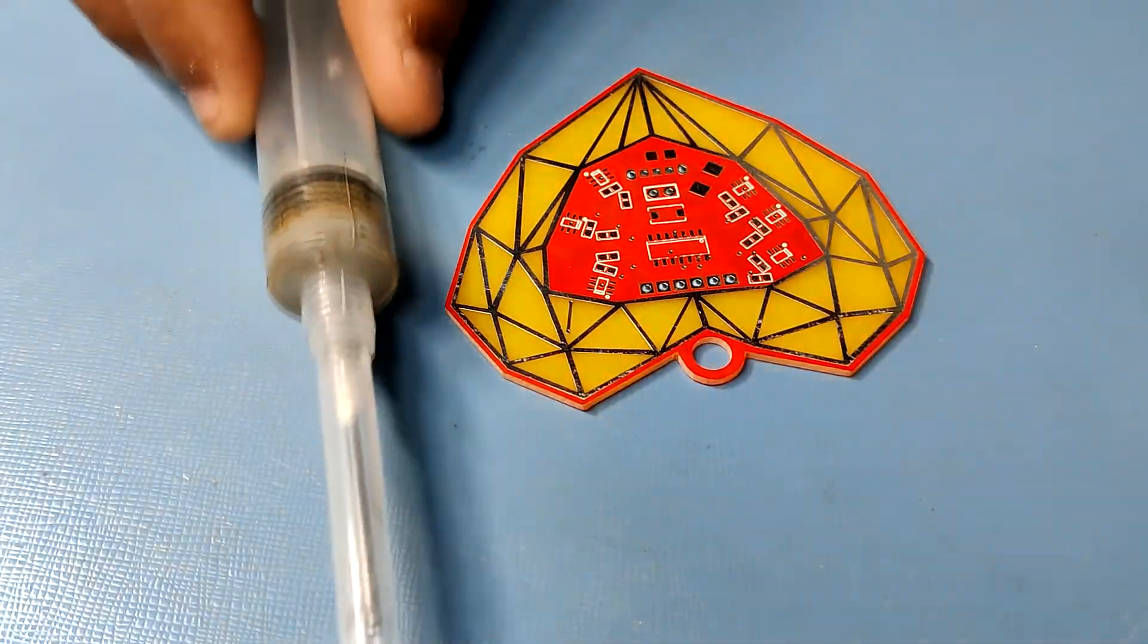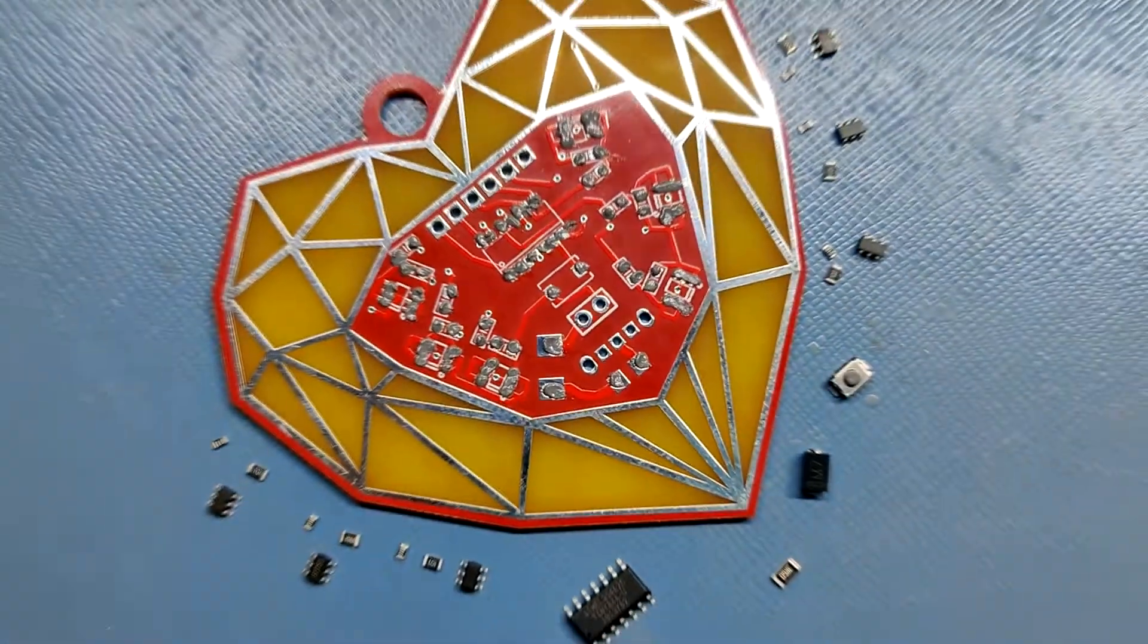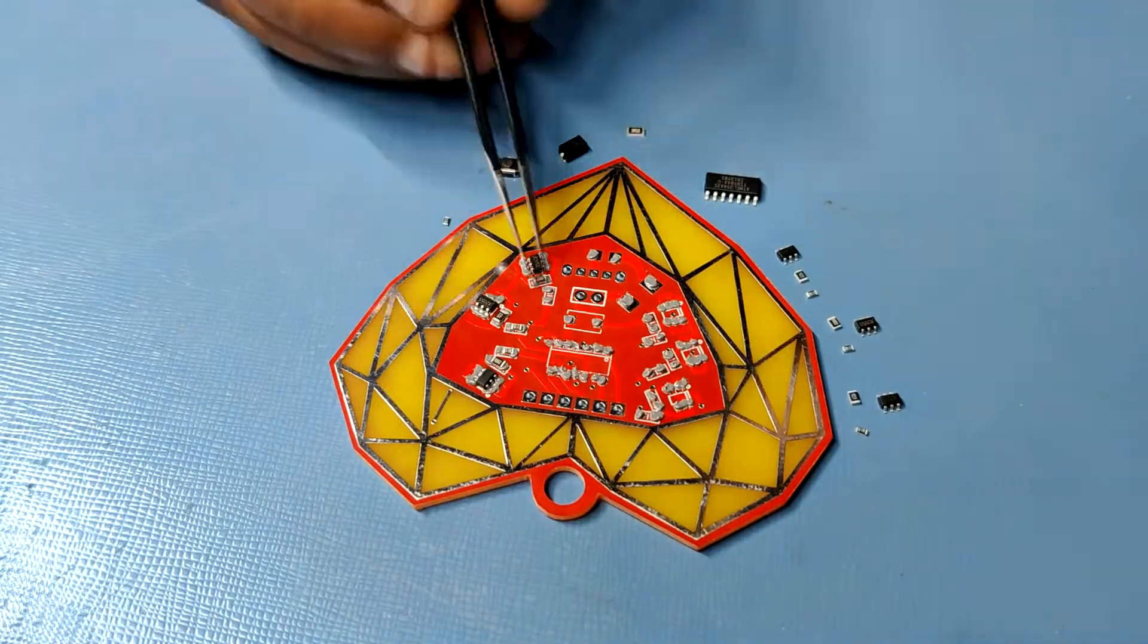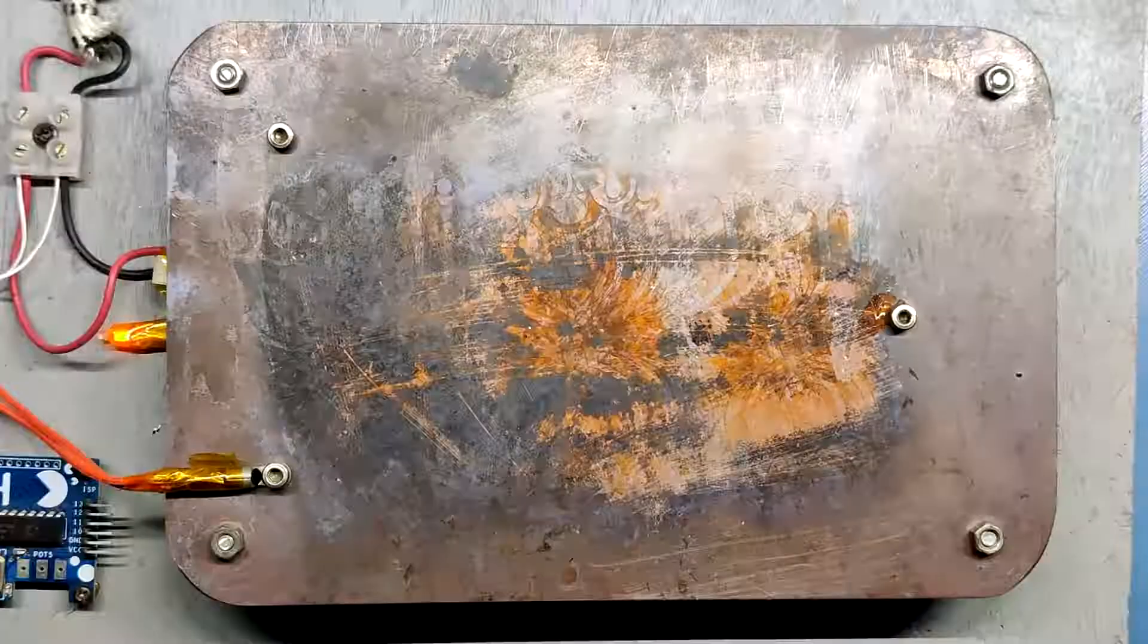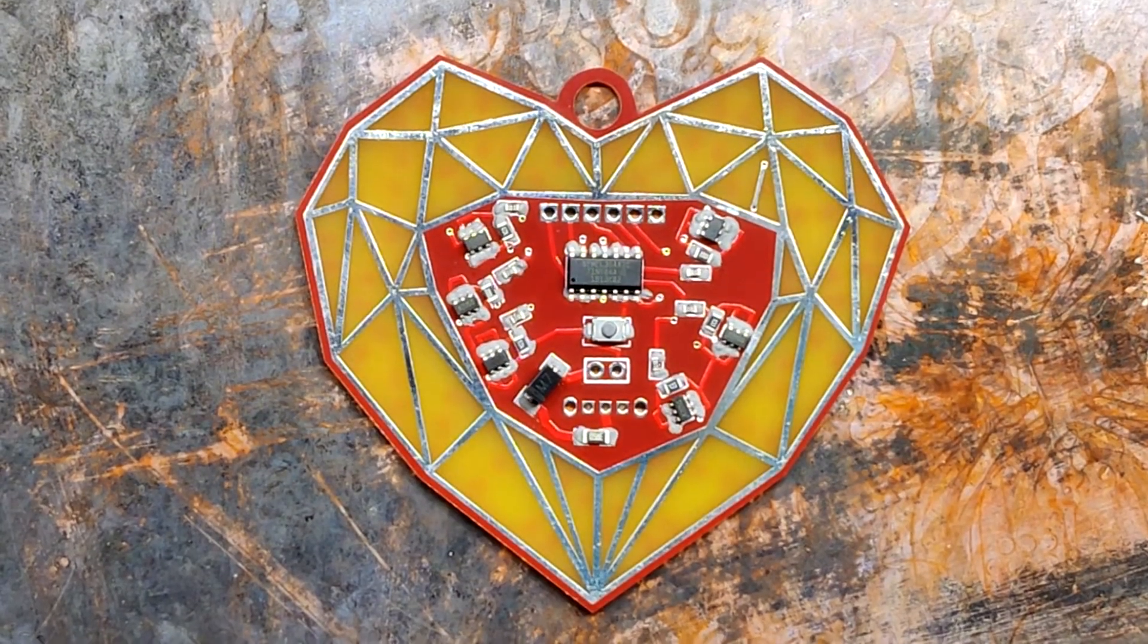To start the assembly process of this board, I first added solder paste to each component pad one by one. Then I added all the components on their place using an ESD tweezer. After this, I added the PCB on my SMT hotplate for the reflow process.